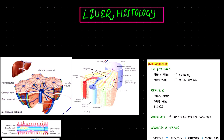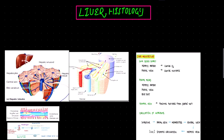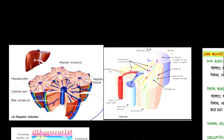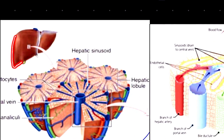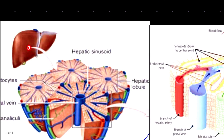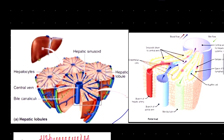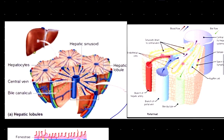The topic of today's lecture is the histology of the liver. The liver is the largest organ of the human body. When we take a small piece of liver and magnify it, we can see hepatic lobules.